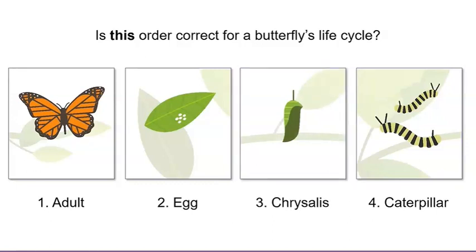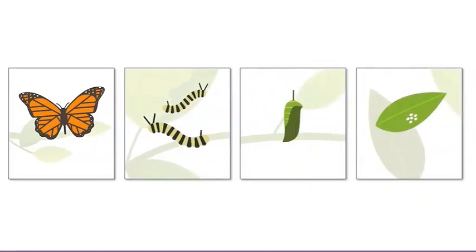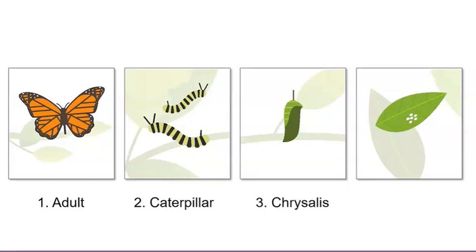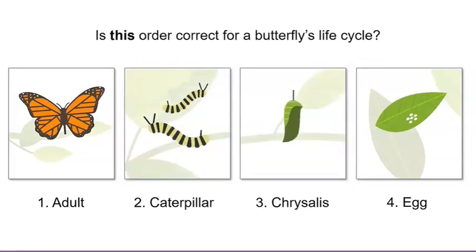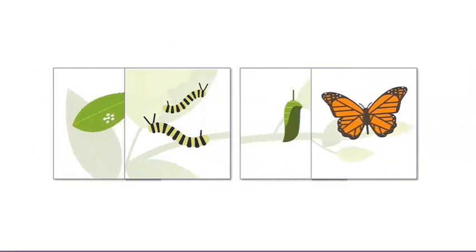The chrysalis. I'll leave that card where it is and shuffle the others around. Now, is this order correct for a butterfly's life cycle? Adult, caterpillar, chrysalis, then egg? I think we're closer to the correct order. I know that caterpillars form chrysalises, so I'll leave stages two and three where they are. But I think we need to switch the other two cards around.